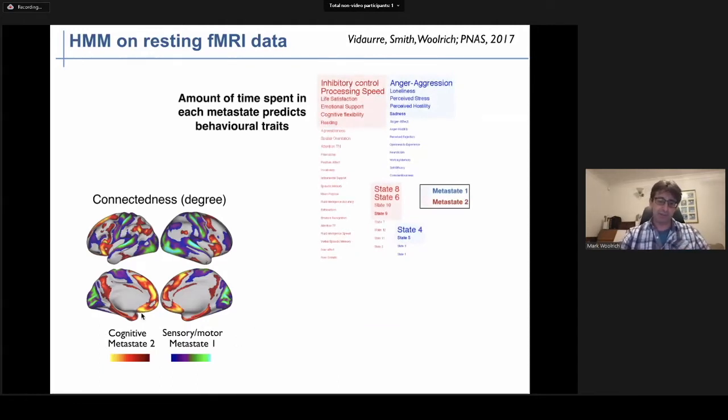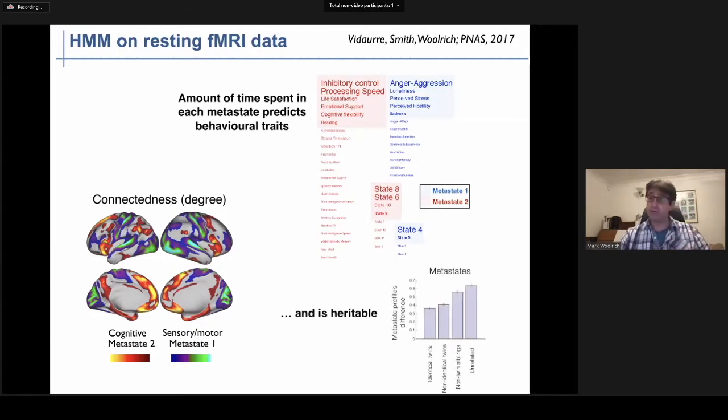What we found was that people who spend more time in the cognitive metastates are more likely to be associated with positive psychological traits. Those who spend more time in the sensory motor metastates are more likely to be associated with negative psychological traits. We also found using the twin structure in Human Connectome Project data that the time spent in metastates was also heritable.